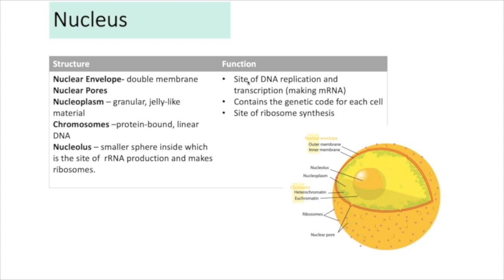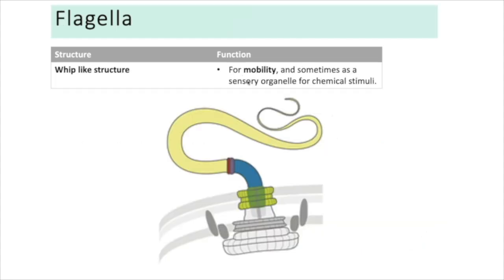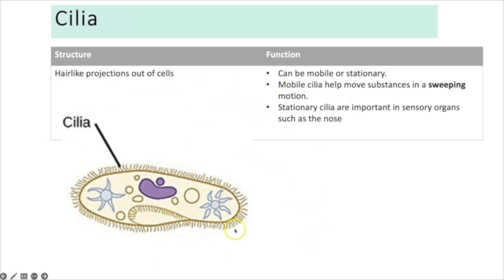Flagella are not found on all eukaryotic cells — for example, sperm cells have them. This whip-like tail structure functions for mobility and sometimes as a sensory organelle for chemical stimuli. Cilia are also not on all cells; these are hair-like projections from the cell that can be stationary or mobile.